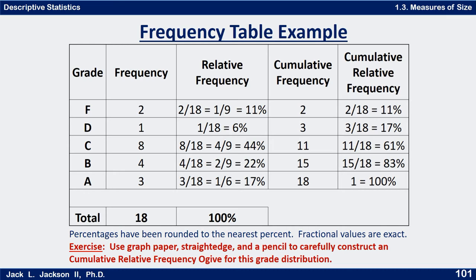This is data that we looked at in an earlier video — some made-up data for distribution of grades. Here's the table we worked out earlier, which has the grade, the frequency, relative frequency, cumulative frequency, and cumulative relative frequency. Get a piece of graph paper, a straight edge, and a pencil, and carefully construct a cumulative relative frequency ogive for this grade distribution.